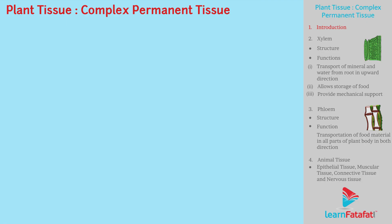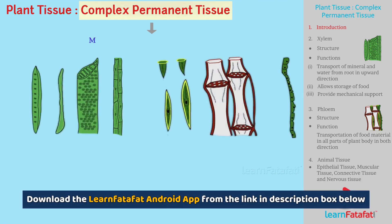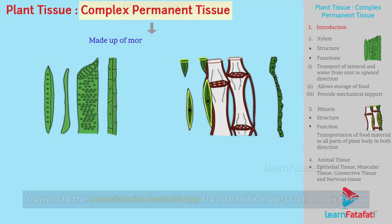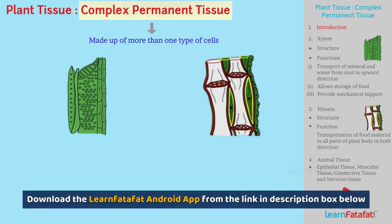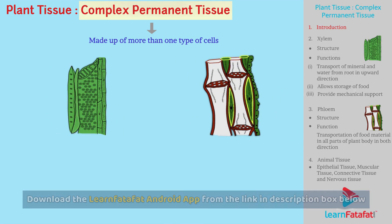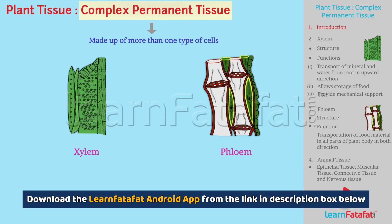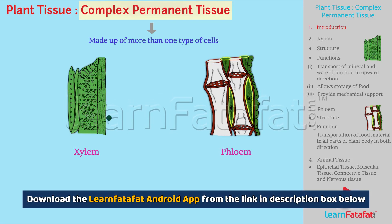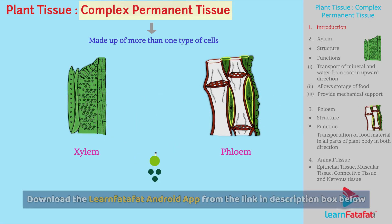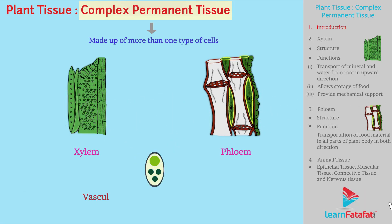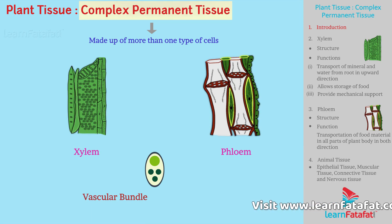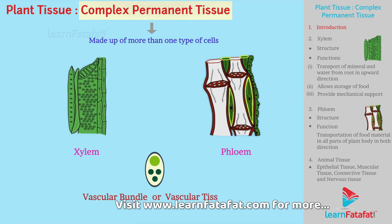Dear students, a complex permanent tissue is made up of more than one type of cells. It is classified as Xylem and Phloem. Xylem and Phloem together constitute the vascular bundle. Hence, they are also known as vascular tissues.